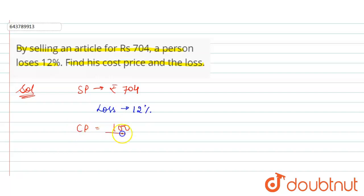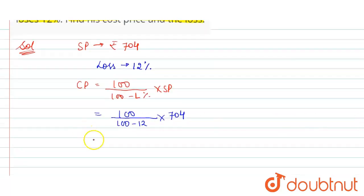100 divided by 100 minus loss percent into SP. Now put their values, that is 100 divided by 100 minus 12 into SP is 704. Now solve this: that is 100 divided by 100 minus 12 is equals to 88 into 704.